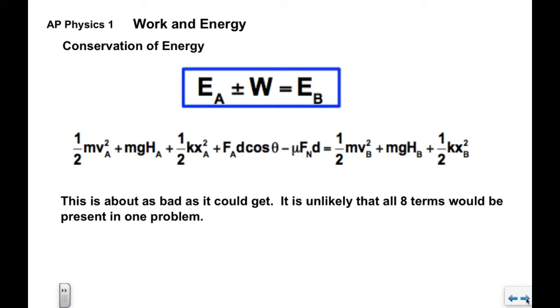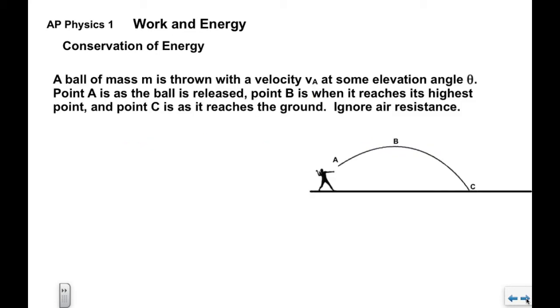So now we'll take this idea and we will apply it to a few different types of problems, some things that we've already seen that we will look at from a work and energy perspective. We have a ball that has a mass m. It's thrown with some velocity v sub A at some elevation angle theta. When we look at the trajectory here we can see that we have three points of interest: A, B, and C. Point A is as it's released, B is at the highest point, and C is as it hits the ground. And we're told we can ignore air resistance.